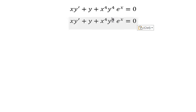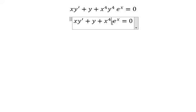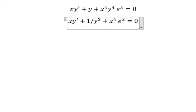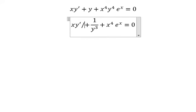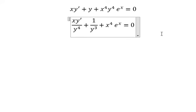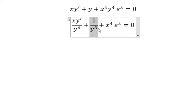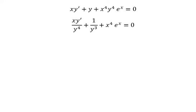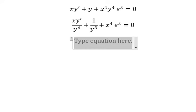We need to divide both sides by Y to the power of 4. So we see that we have 1 over Y to the power of 3, first derivative of Y over Y to the power of 4. This is about Bernoulli's equation.